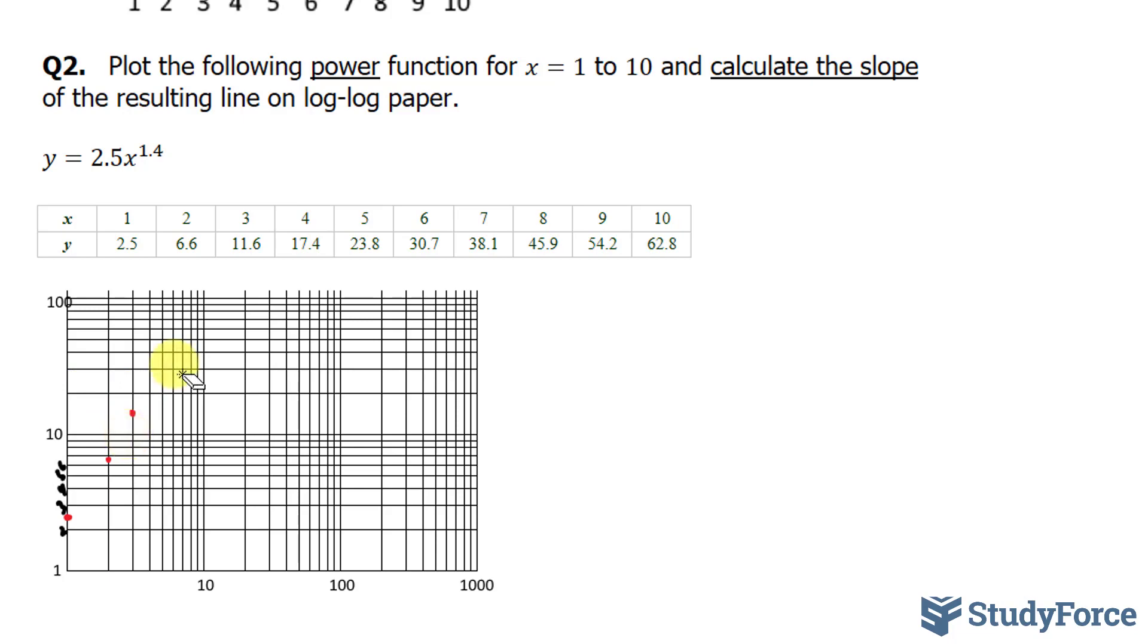My next point is 4 and 17.4. So that's 1, 2, 3, 4. And 17.4 should be somewhere here. 5 and 23.8. Should be over here. 6 and 30.7. And 30 should be that third line. That's 20 and that's 30. And the rest of the points should be plotted like this.